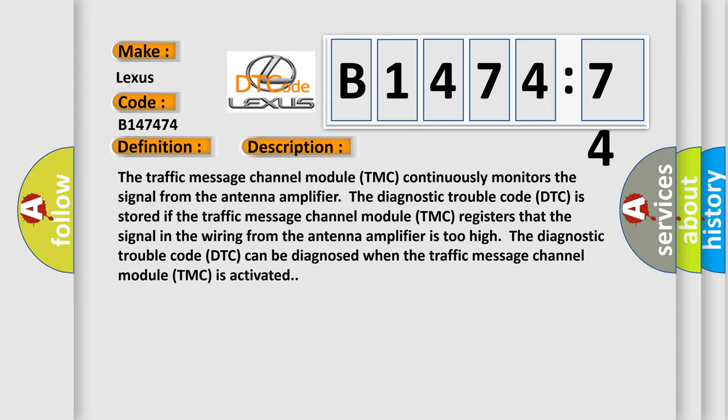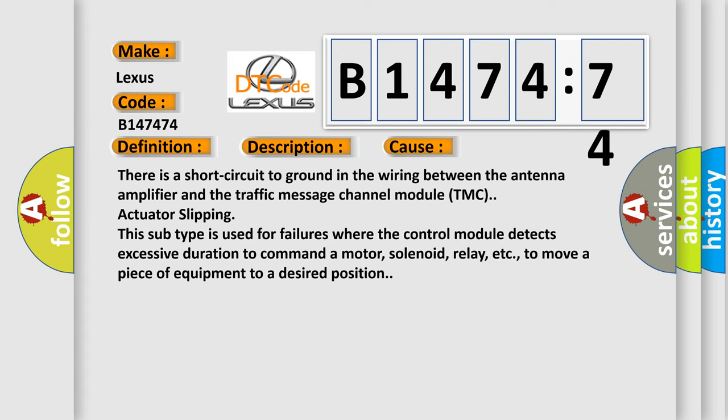And now this is a short description of this DTC code. The traffic message channel module TMC continuously monitors the signal from the antenna amplifier. The diagnostic trouble code DTC is stored if the traffic message channel module TMC registers that the signal in the wiring from the antenna amplifier is too high. This is why the diagnostic trouble code DTC can be diagnosed when the traffic message channel module TMC is activated.